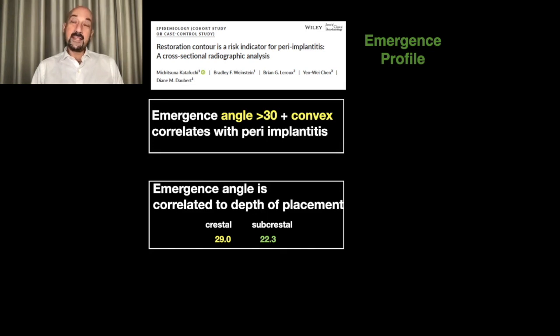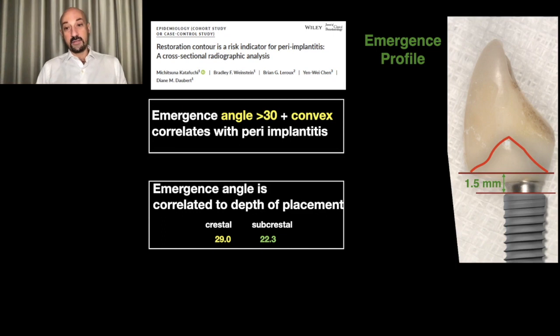If you place the implant too shallow, you might predispose to peri-implantitis much more than if you place it at the correct depth to facilitate the soft tissues. Remember the example of a shallow-placed implant and how difficult it is to create a sustainable emergence profile.